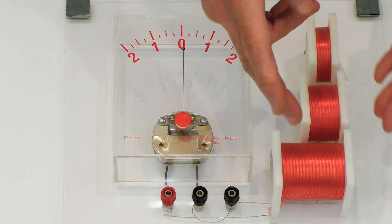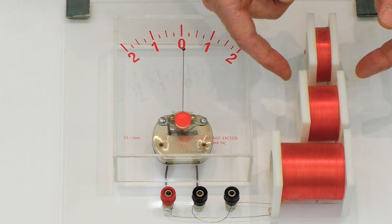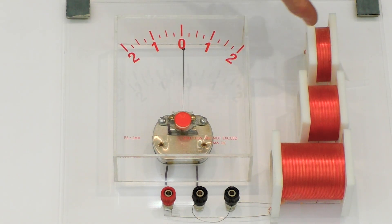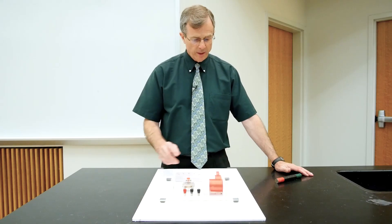What I have here are three separate coils of wire: one with very few windings, one with about double the number of windings, and one with approximately quadruple the original number of windings of wire in this coil. I also have a galvanometer; it just measures the amount of current in the wire, in the coil.